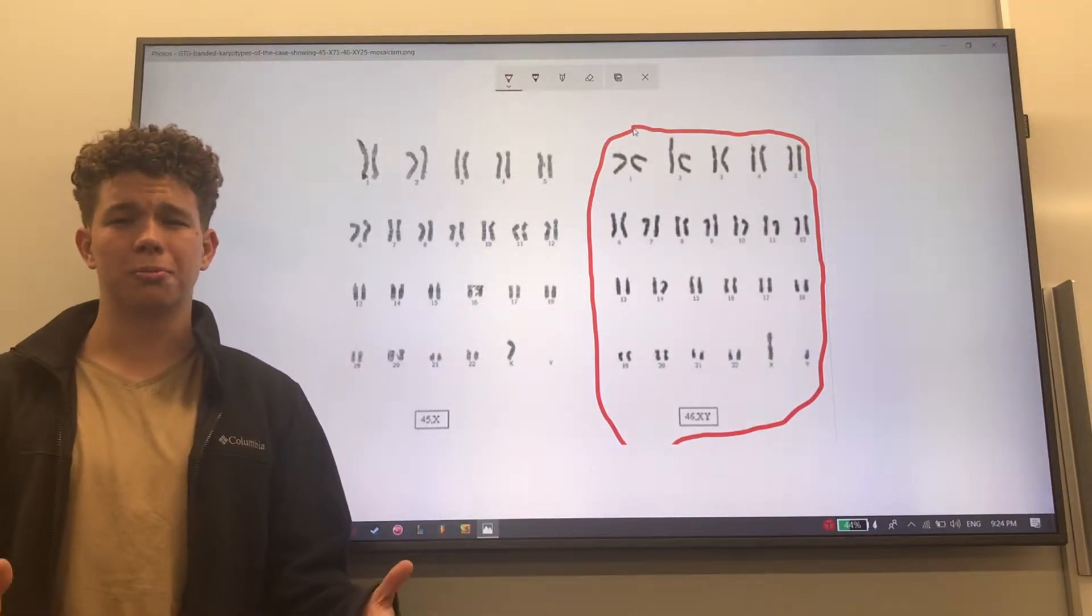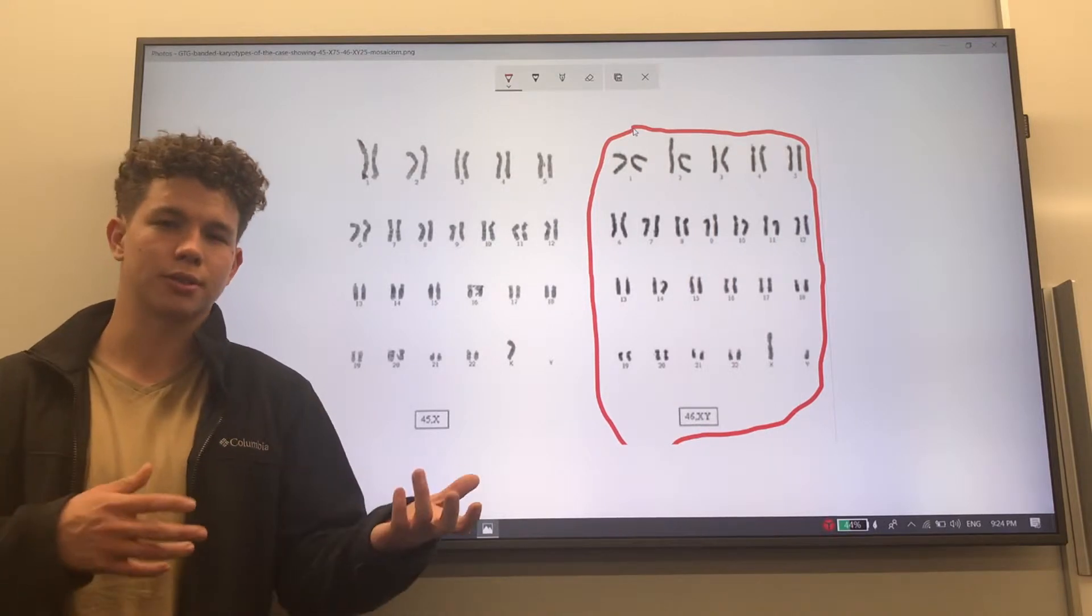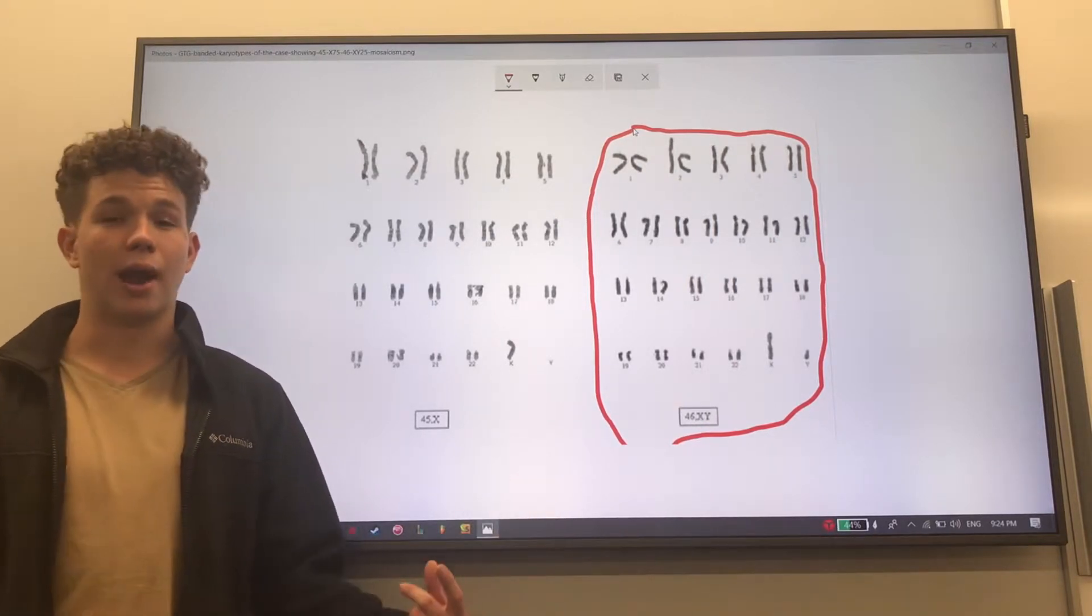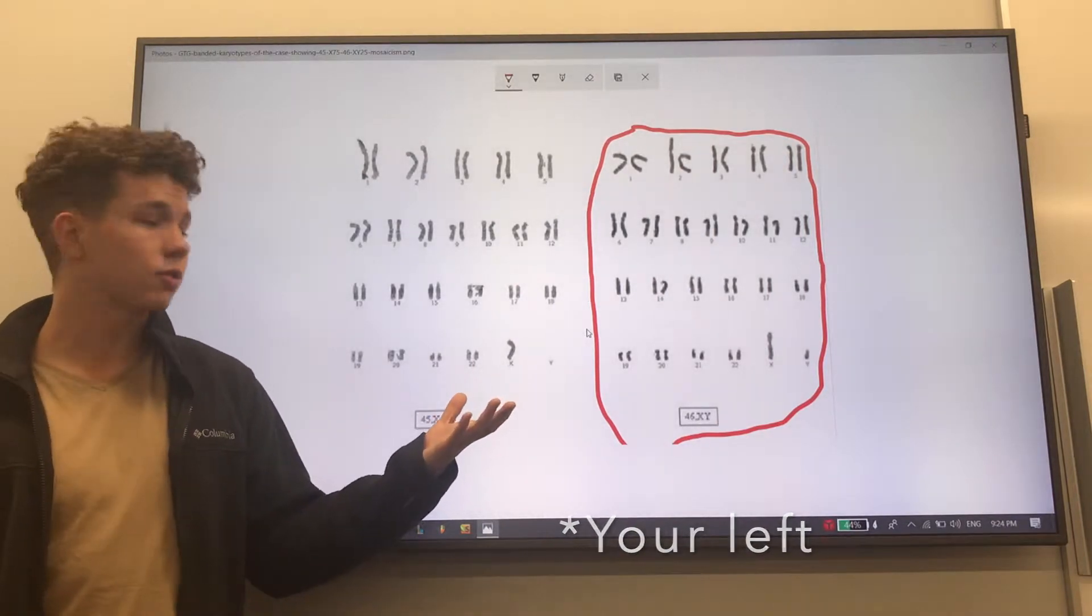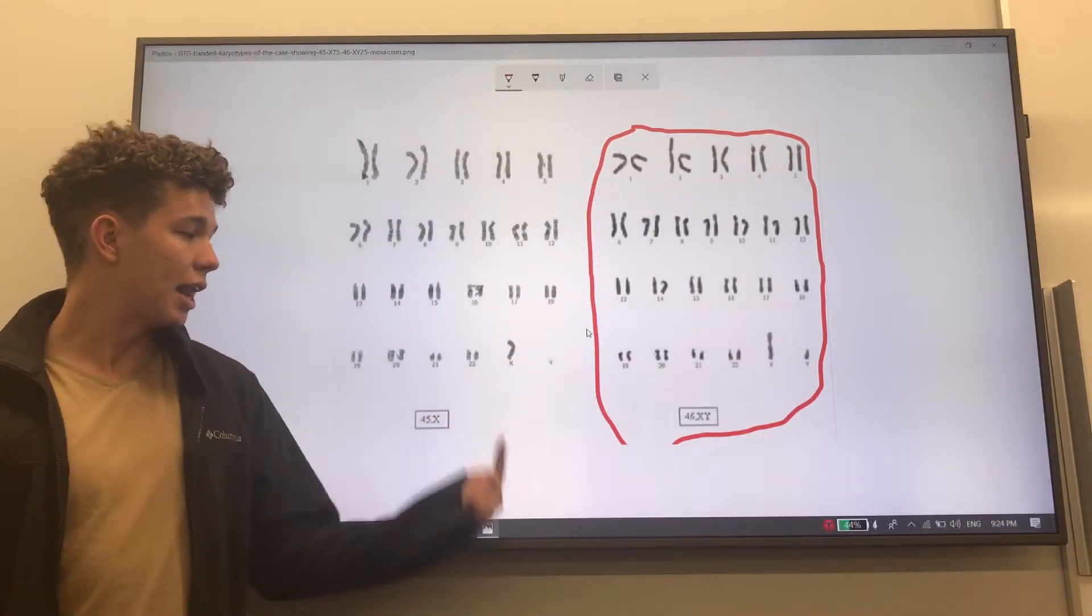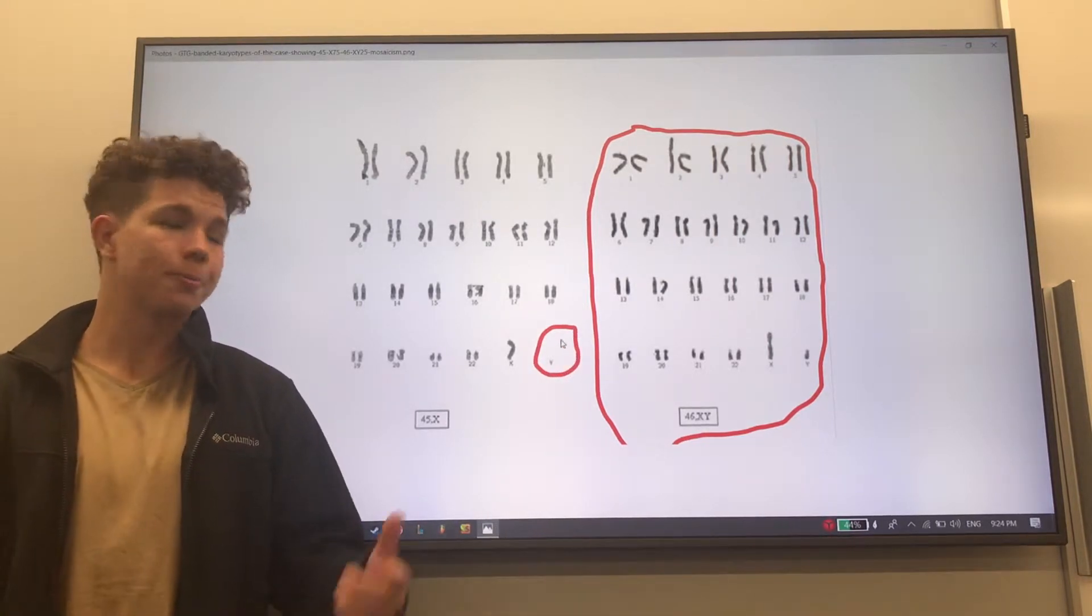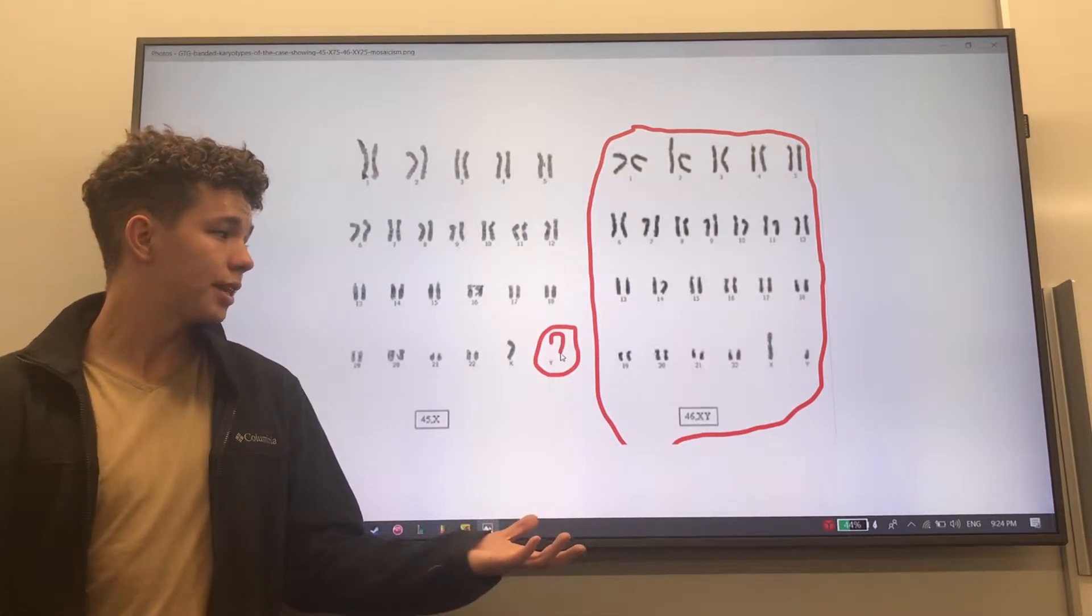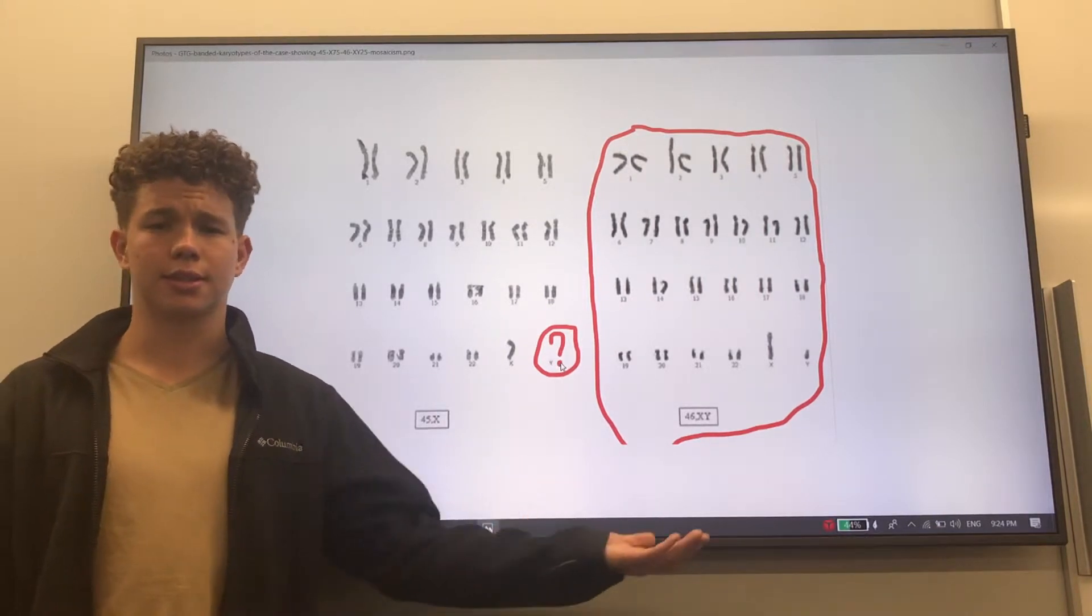And this is what would be in some of the XY mosaicism person's cells. Now on the right what we see is again 22 pairs of base chromosomes, an X, but then the Y is missing. And so in the XY mosaicism person they have some cells like this and some cells like this.